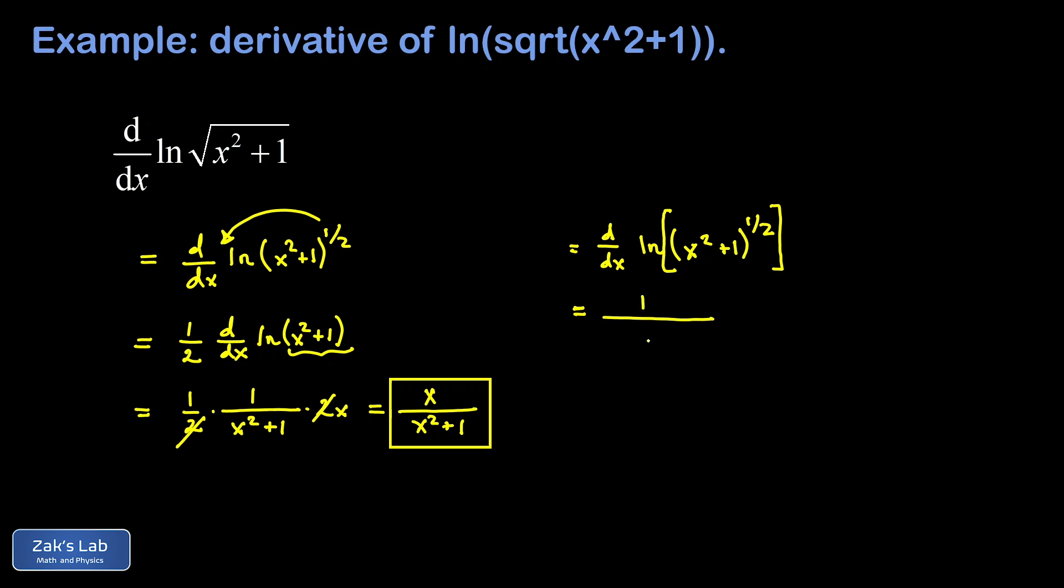So the natural log function is the outermost function here. So we begin with the chain rule by saying that we have one over the argument of the natural log function. So one over x squared plus one, all raised to the one half power.